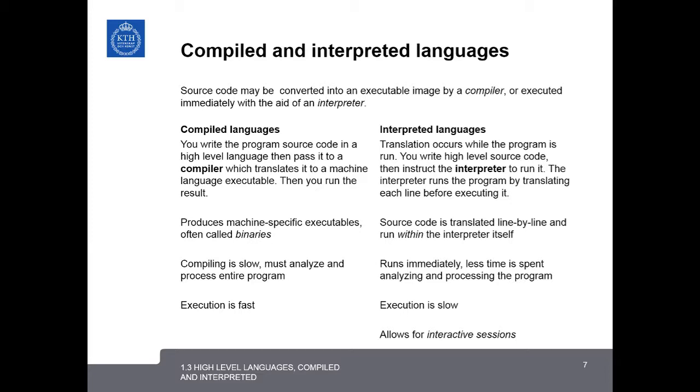With compiled languages, you first write the program's source code in a high-level language, and then give it to a compiler which translates it to a machine-level language executable. Then, you can run the result as a completely separate step. This produces machine-specific executables, often called binaries, which contain machine code. The compiling is a slow process, and it must analyze and process the entire program at once, but the resulting executable file is often very fast.